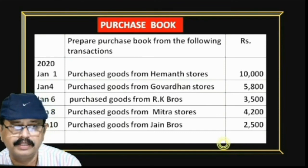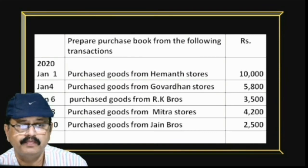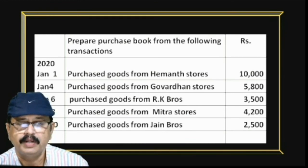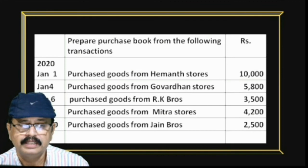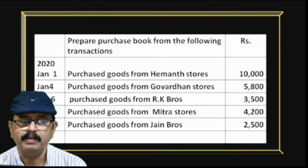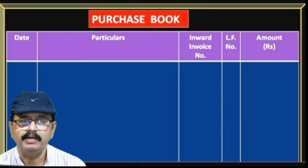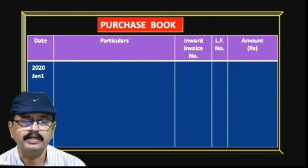Prepare the purchase book from the following transactions for January 2020: January 1st — purchased goods from Hammond Stores 10,000; January 4th — purchased goods from Govardhan Stores 5,800; January 6th — purchased goods from RK Bruce 3,500; January 8th — purchased goods from Mitra Stores 4,200; January 10th — purchased goods from Jane Stores. Now we draw the format with columns: date, particulars, inward invoice number, LF number, and amount in rupees.